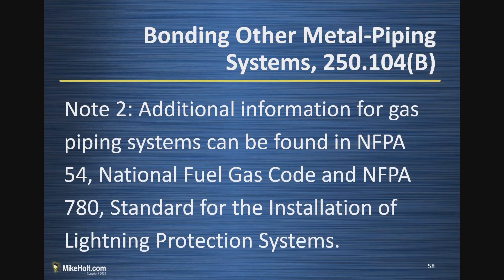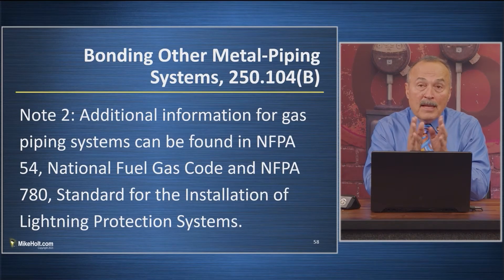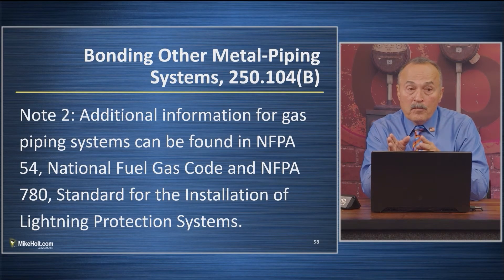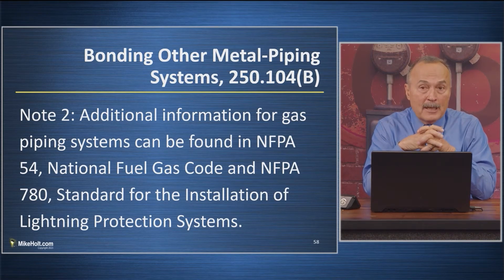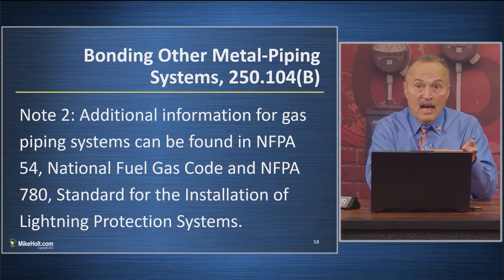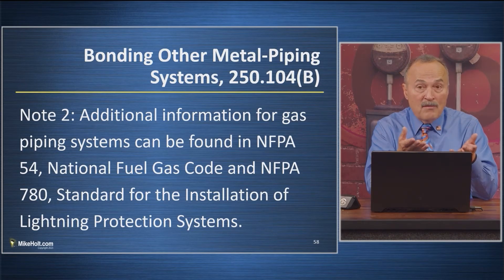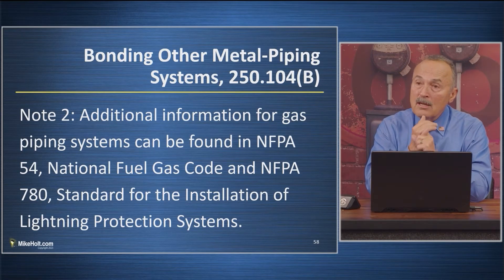NFPA 54, the National Fuel Code, tells you what you have to do with gas pipe bonding. The National Electrical Code does not have any requirements at all having to do with gas pipe bonding. If you go to NFPA 54, it says you have to bond gas piping in accordance with NFPA 70. But NFPA 70 says if the circuit that can energize it contains an equipment grounding conductor, that serves the bonding purpose — which means we do nothing.